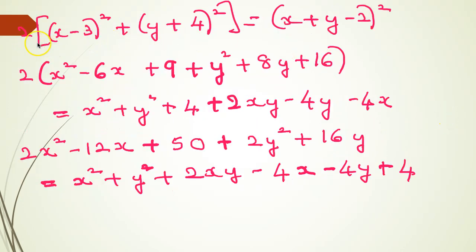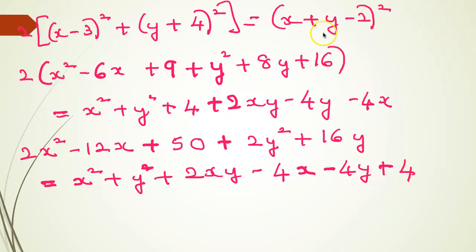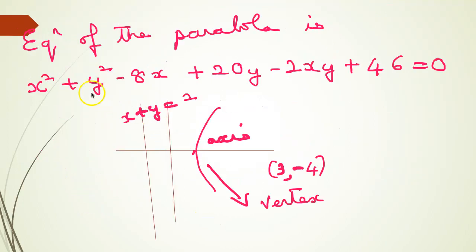Cross multiplying, we get 2 × [(x - 3)² + (y + 4)²] = (x + y - 2)². Expanding using (a - b)² = a² - 2ab + b², we get y² + 8y + 16 on one side. Using (a + b + c)² = a² + b² + c² + 2ab + 2bc + 2ac, and simplifying, the final equation of the parabola is x² + y² - 8x + 20y - 2xy + 46 = 0.